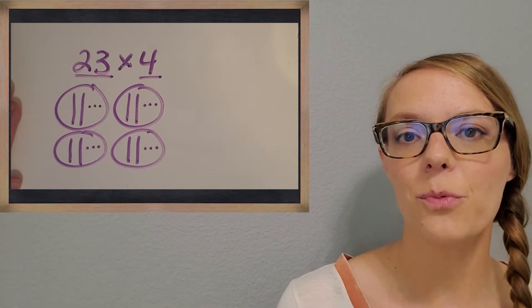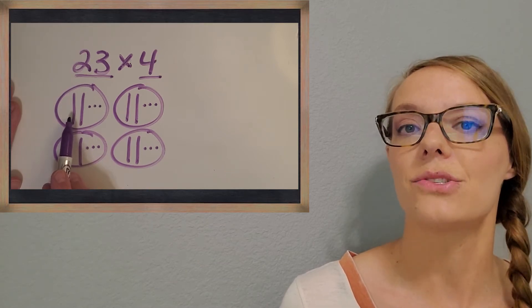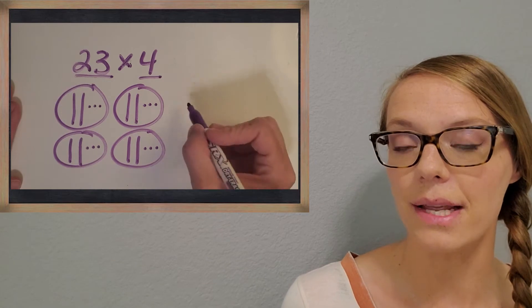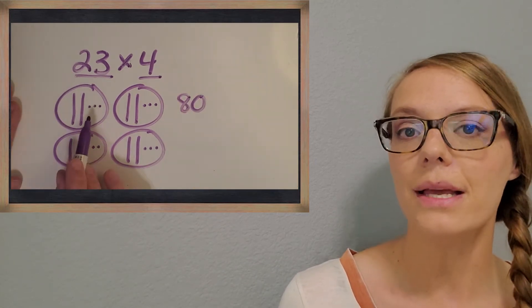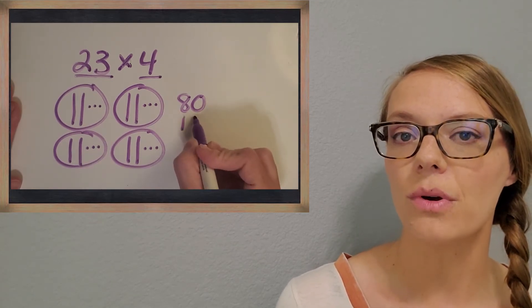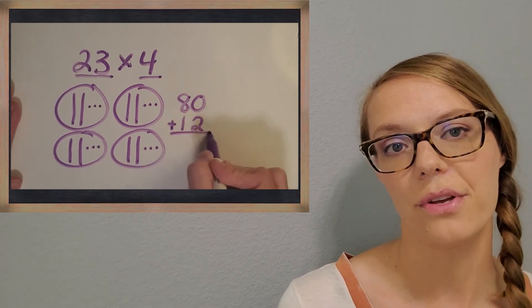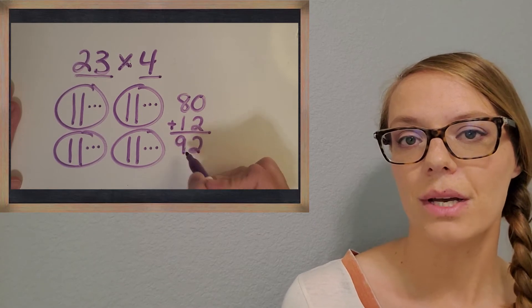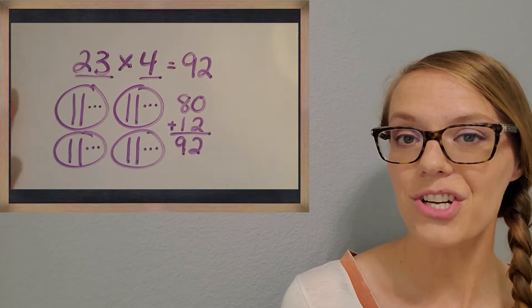All right, let's check your work. So when you counted up the 10s, I bet you did something like this: 20, 40, 60, 80. I'll go ahead and write that down. And then when you counted up the ones, you probably said 3, 6, 9, 12, and you'll write that down too. And then what's the total of 80 plus 12? Great! 92! So 92 is the answer to 23 times 4. Great job!